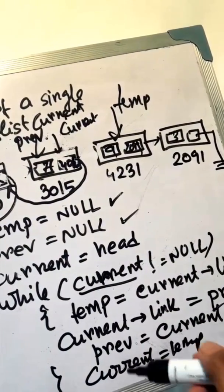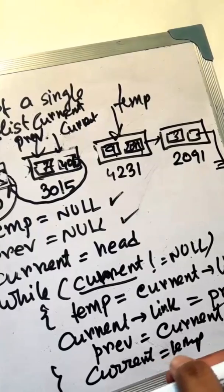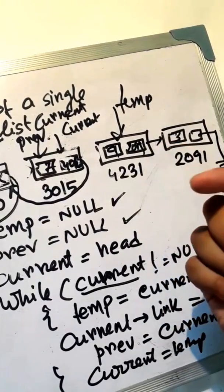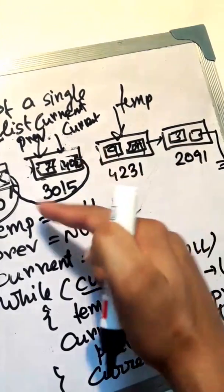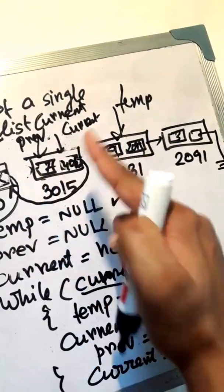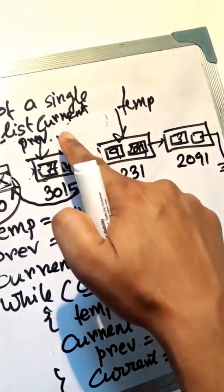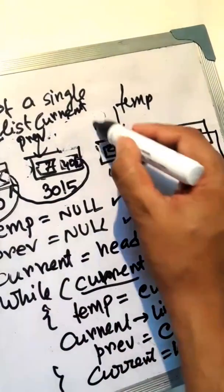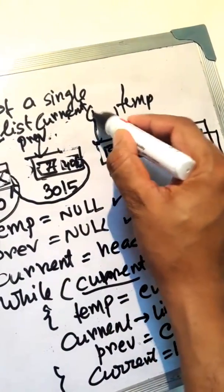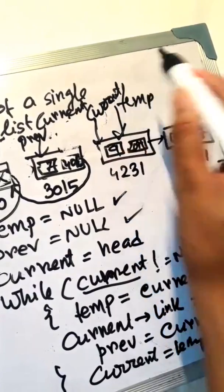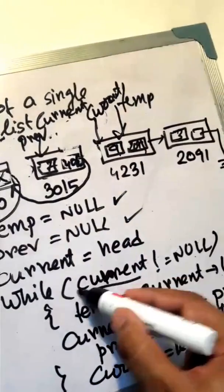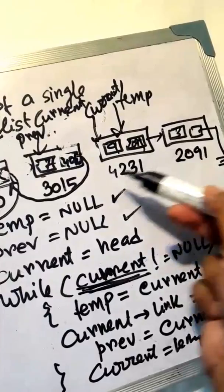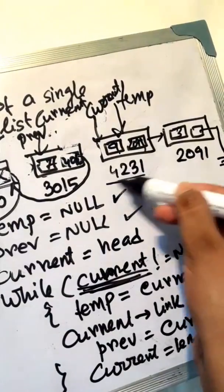Now previous equals current and current equals temp. Current is now equal to temp. We put current to temp and move to the next current. In this loop, current is not equal to null — current is at address 4231.